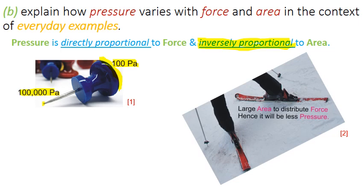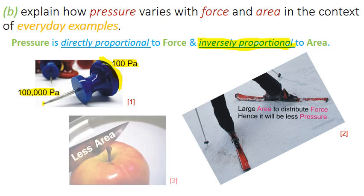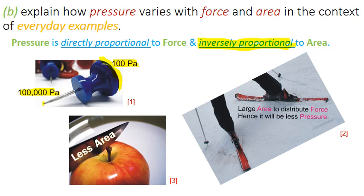Another example here is of ski. Here you can see this ski has large area so it is distributing force or weight of the person. Hence it will be low or less amount of pressure so the person cannot get stuck into the ice. One more example is of sharper knives. The sharper the knife, the lesser the area, the higher the pressure. That means it is inversely proportional. Area is large, pressure is less. Or area is small and pressure is very high.